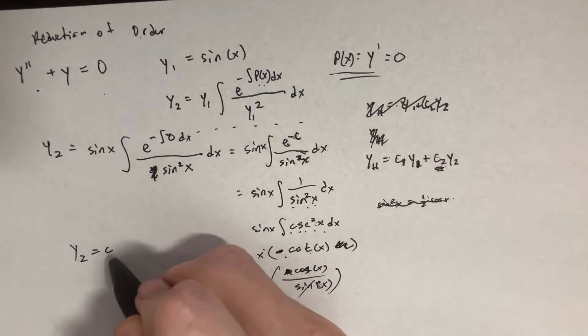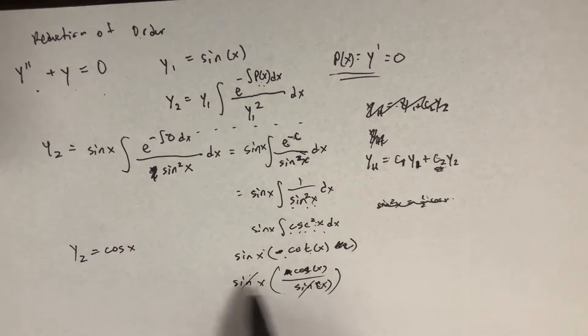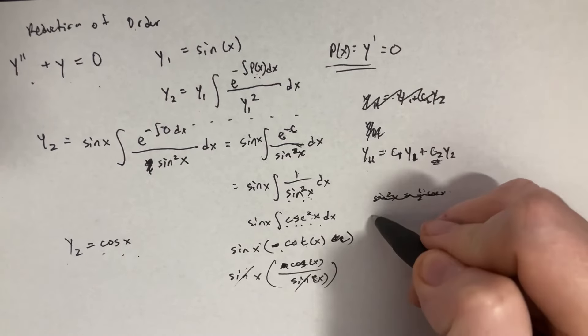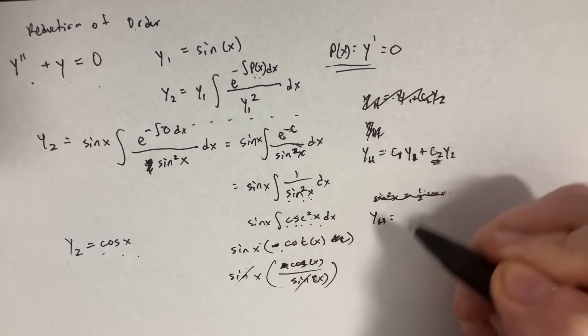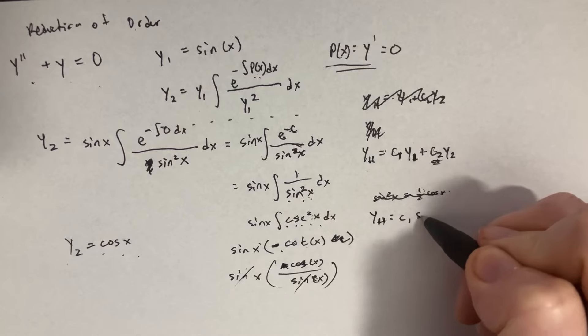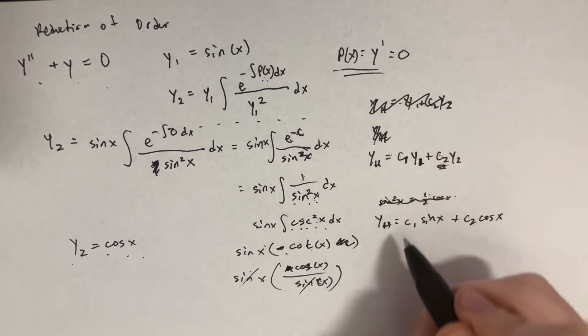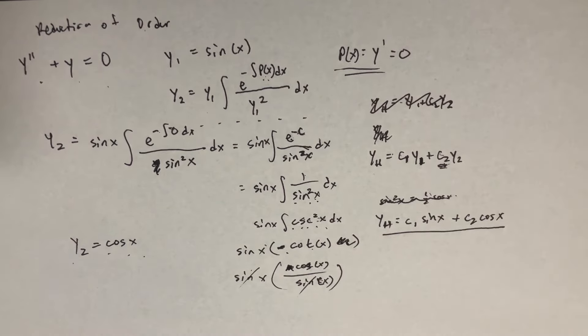So essentially we've simplified all this stuff into cosine of x being our y2. And then once we plug that into this homogeneous equation over here, we get that we have c1 sine of x plus c2 cosine of x. And yeah, so that's some pretty cool stuff.